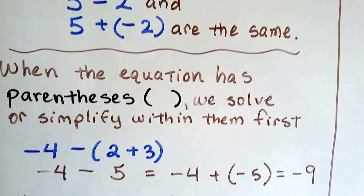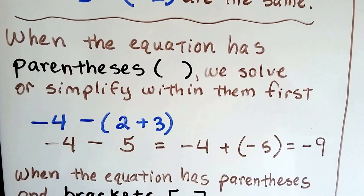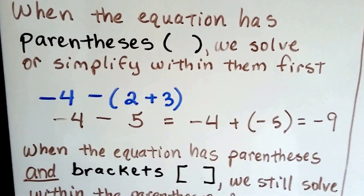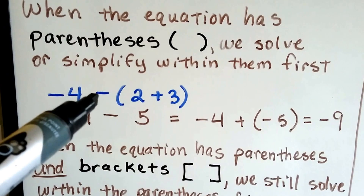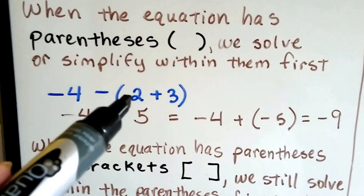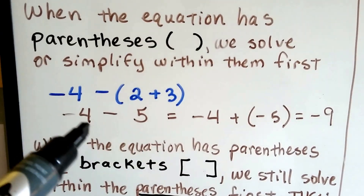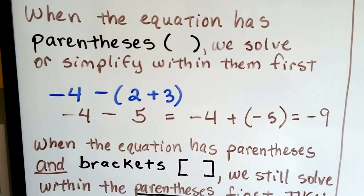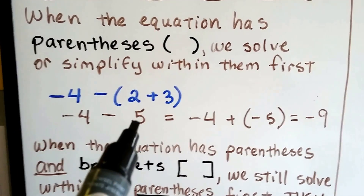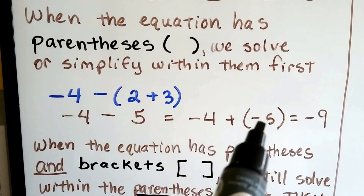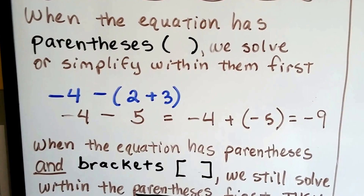When the equation has parentheses, we solve or simplify within them first — that's the order of operations. So if you saw negative 4 minus (2 plus 3) in parentheses, we would solve those first. We'd have negative 4 minus 5. We'd add the opposite, so instead of subtracting a positive 5, we add a negative 5. And negative 4 plus a negative 5 is negative 9.